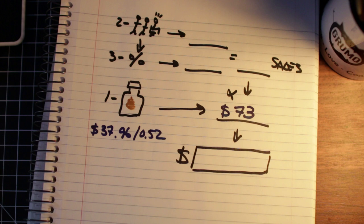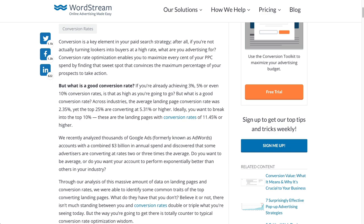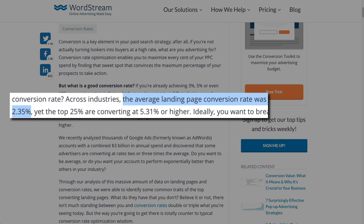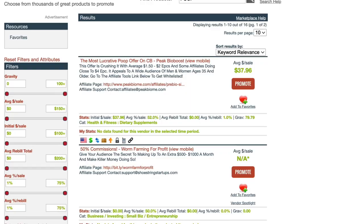Alright, now the final number is the hardest one to find: the conversion rate from visitors to buyers. Here I could take a guess. On average, based on some research, landing pages convert about 2.35%. However, there is another clue that can give us the average conversion rate affiliates are getting.